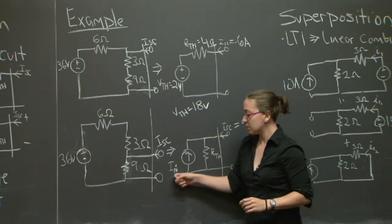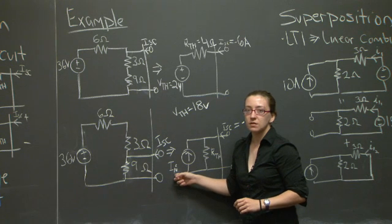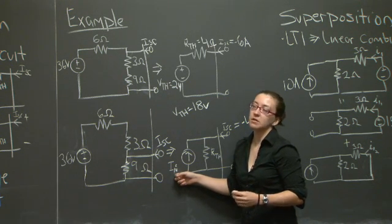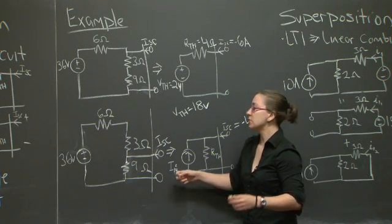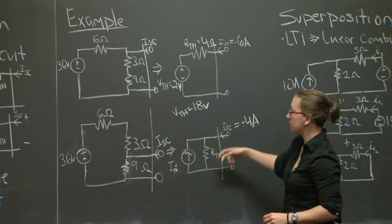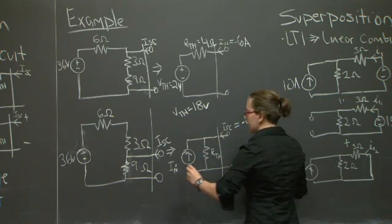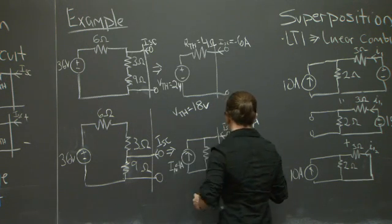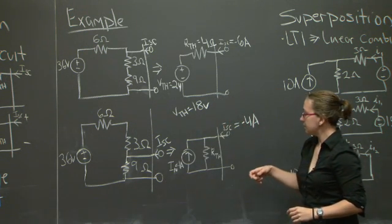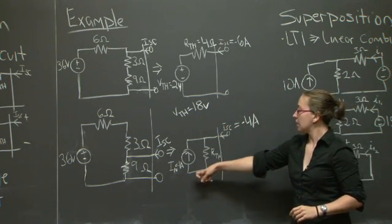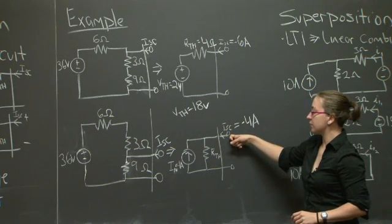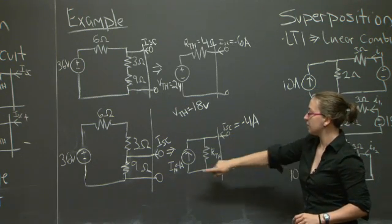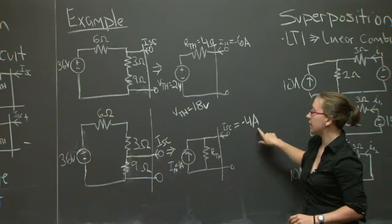In this orientation, the Norton equivalent amperage is actually the negative of this value. You sometimes see the arrow pointing downwards. This preserves our property of short-circuit current. If this was short-circuited, Isc would still be negative 4 amperes.